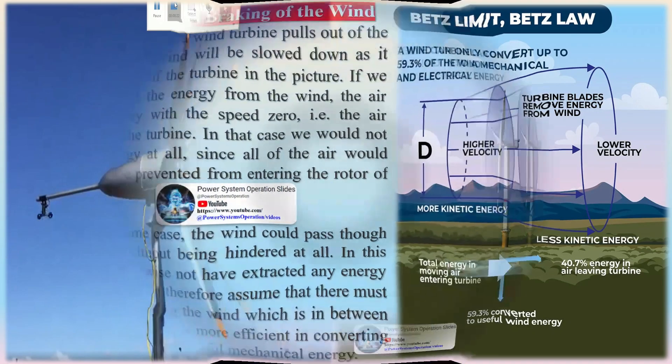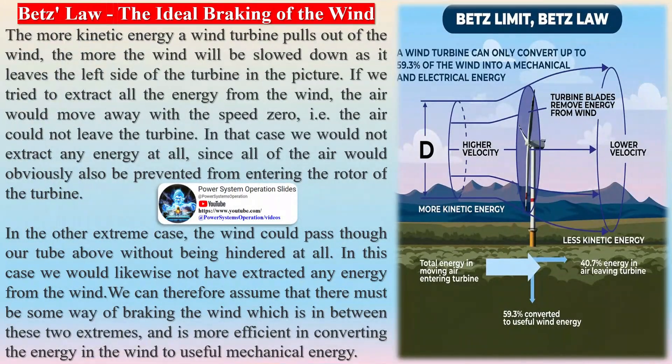The Betz limit is based on an open disk actuator. If a diffuser is used to collect additional wind flow and direct it through the turbine, more energy can be extracted, but the limit still applies to the cross-section of the entire structure.